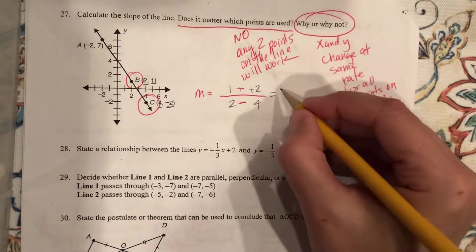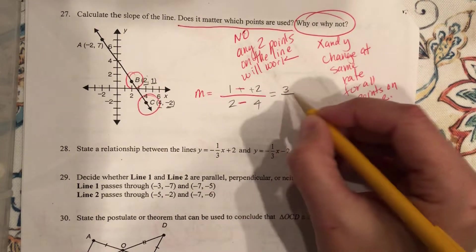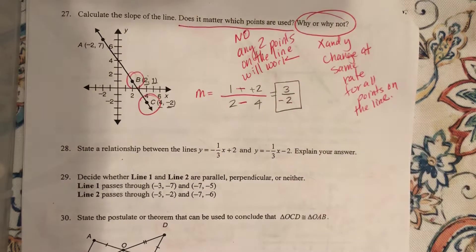Minus a negative becomes plus a positive. So that's 3. 2 minus 4 is negative 2. So your slope is negative 3 over 2.